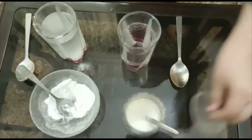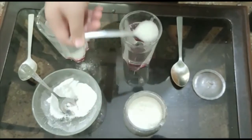And now, we have to add two spoons of crystallized sugar in the second glass.